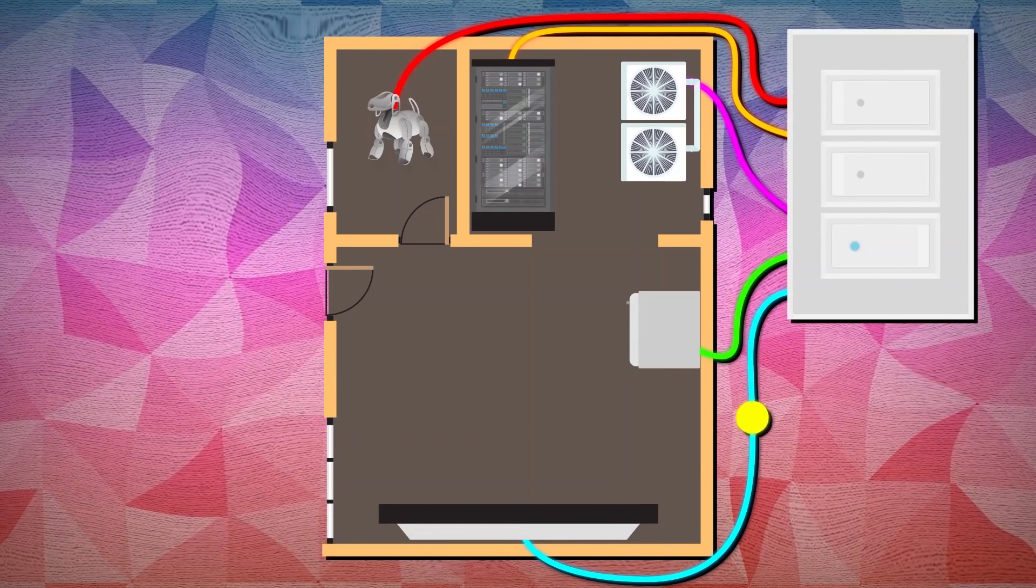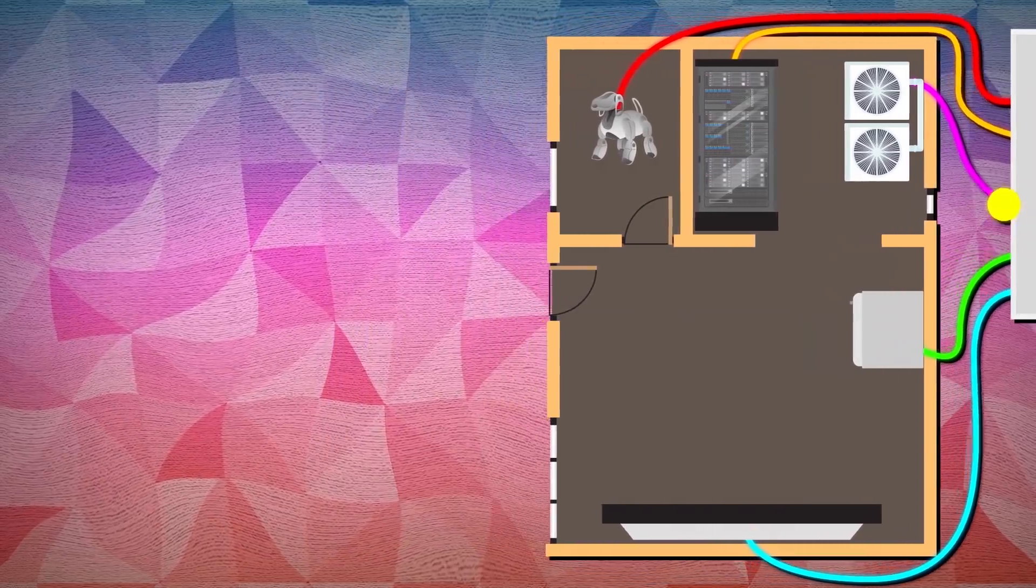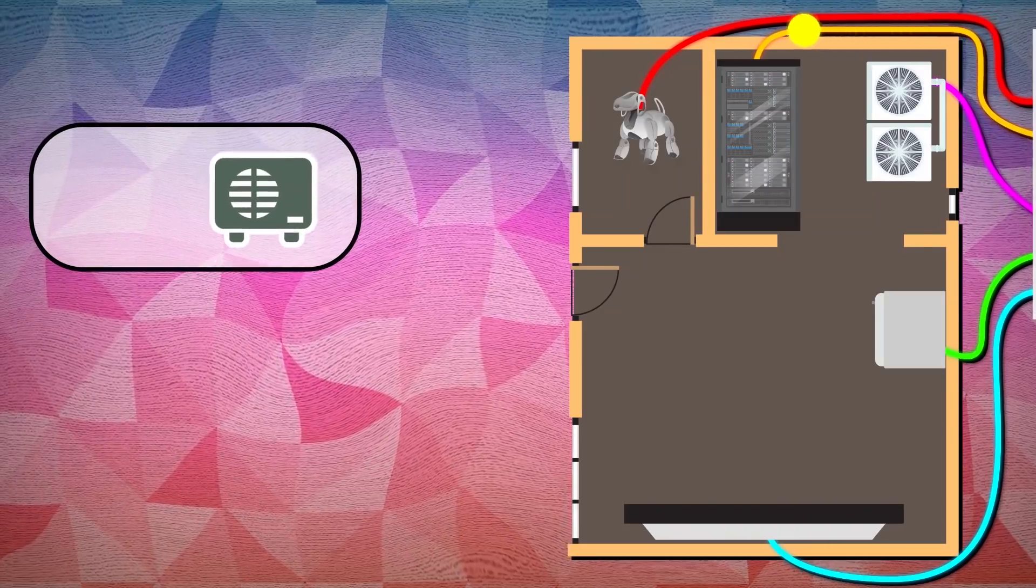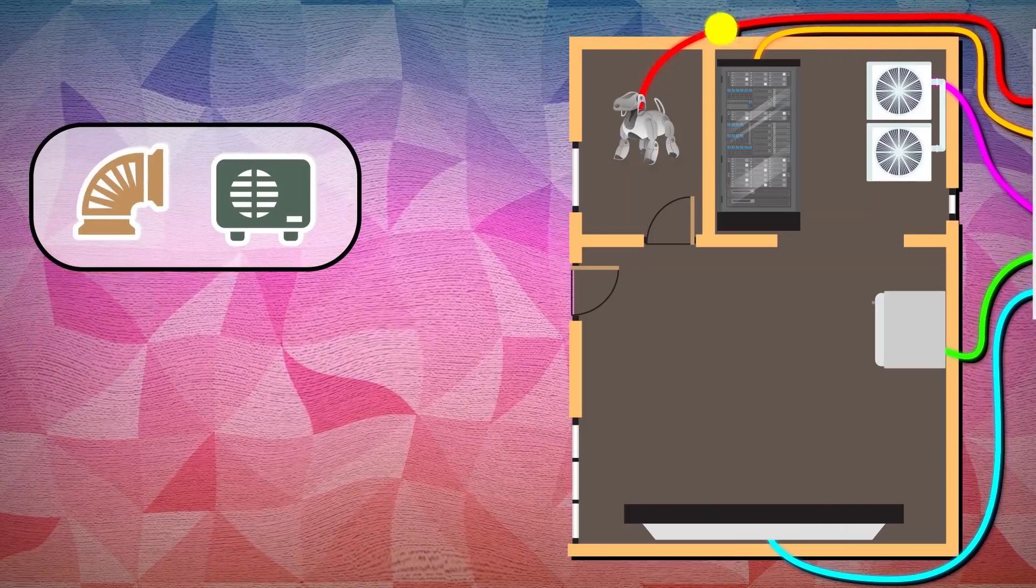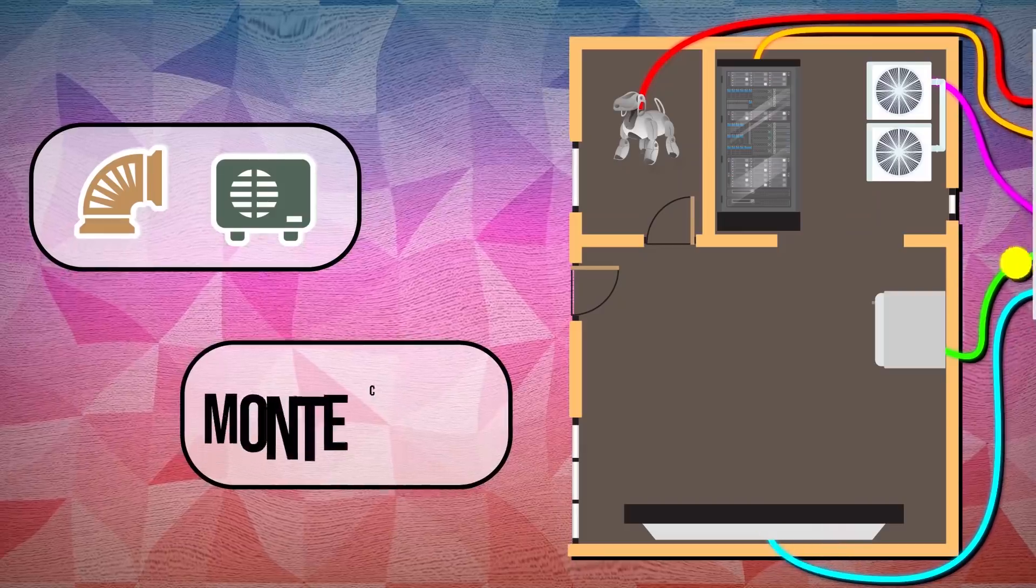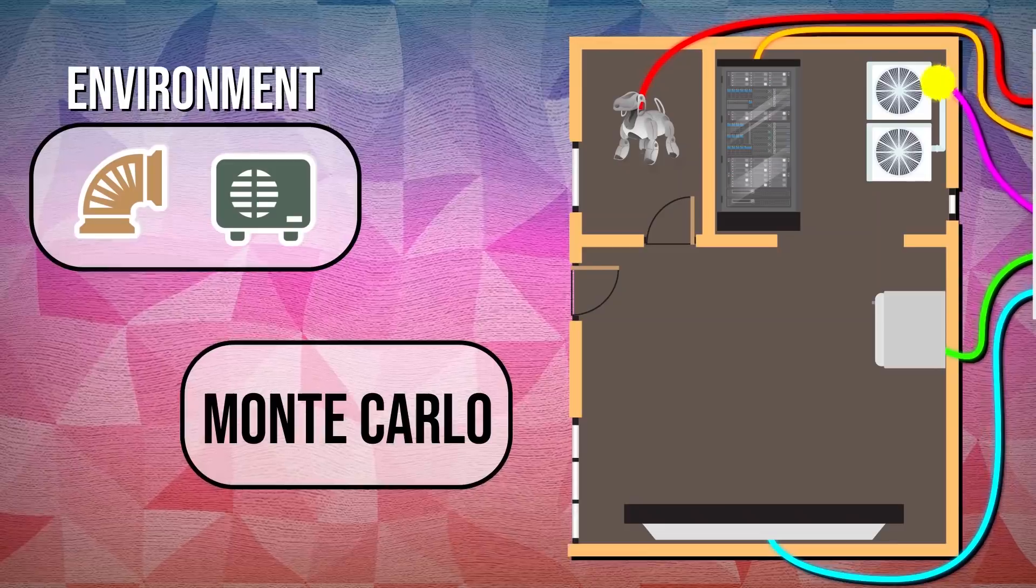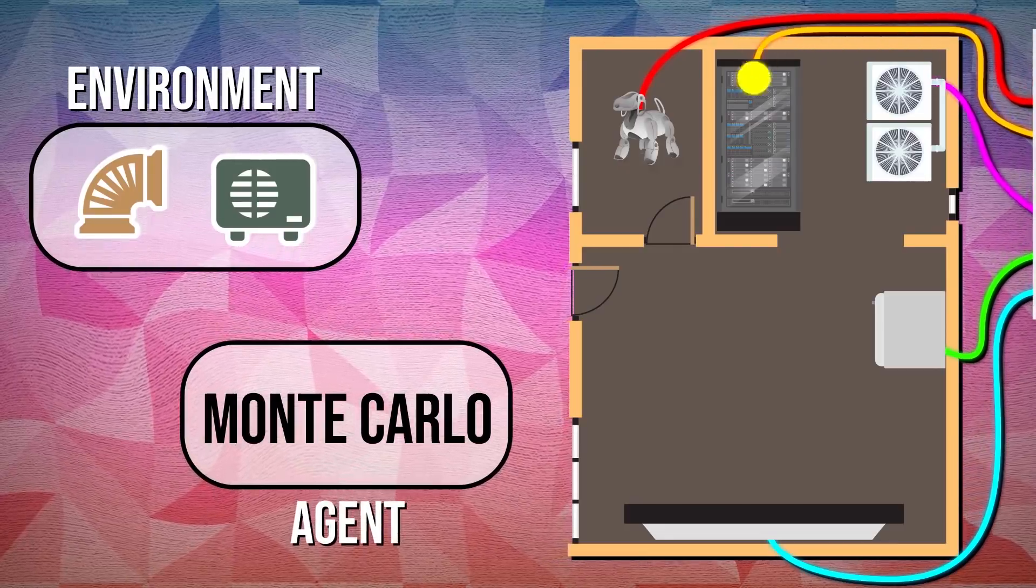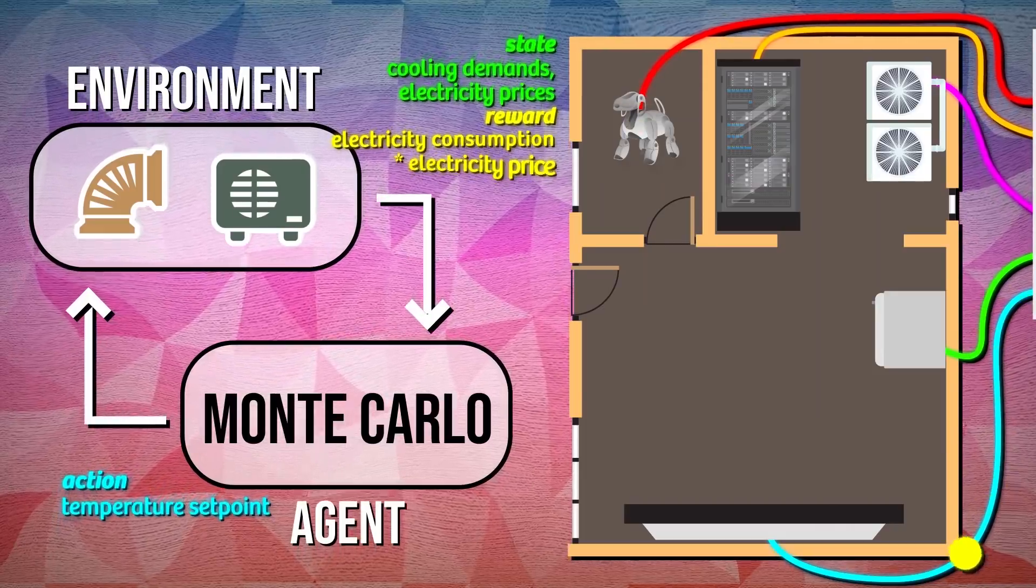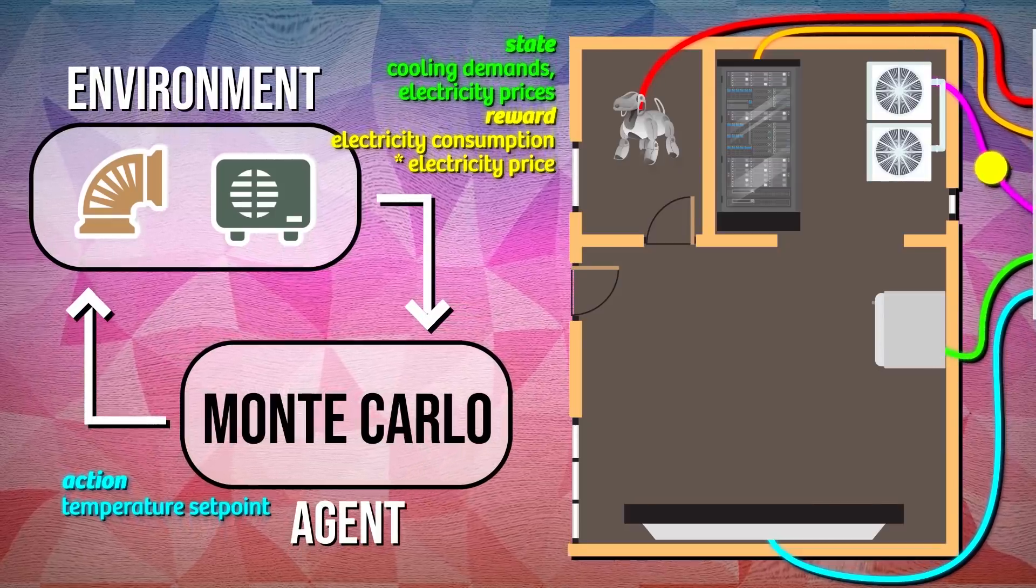Our agent will perform an action in this environment. That action will be to either increase or decrease the temperature by one degree Celsius. My fellow Americans, most of this audience uses the metric system. The state, then, that our agent can be in will be a measure of both how much cooling demand there is as well as the price of electricity. The reward can tell us whether we are saving money or not by switching states, by calculating the total electricity consumption multiplied by the price of electricity, and depending on if that's greater or less than what existed the time step before, we know whether or not that is a positive or negative reward.